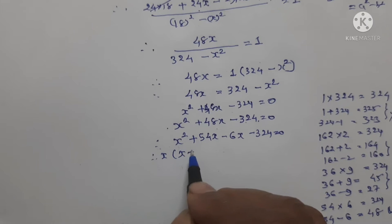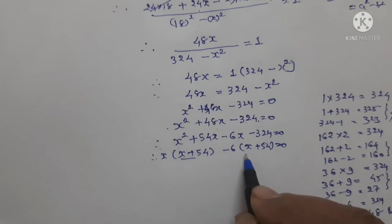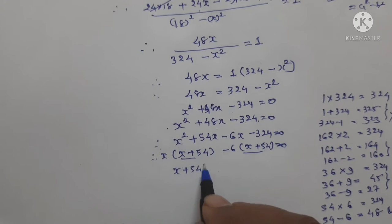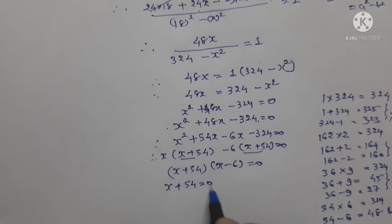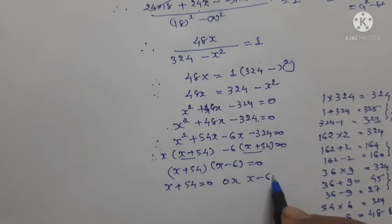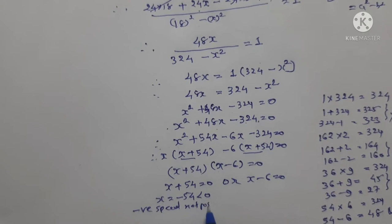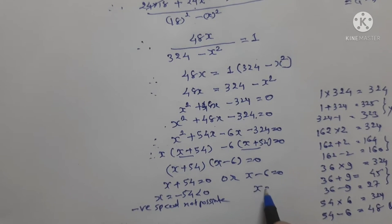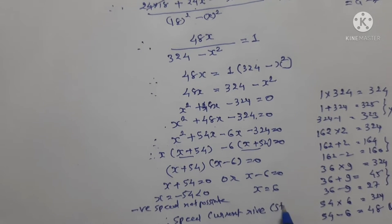Taking x common: x(x plus 54) minus 6(x plus 54) equals 0. Therefore (x plus 54)(x minus 6) equals 0. So x plus 54 equals 0 or x minus 6 equals 0. x equals minus 54 — negative speed is not possible. Therefore x equals 6.